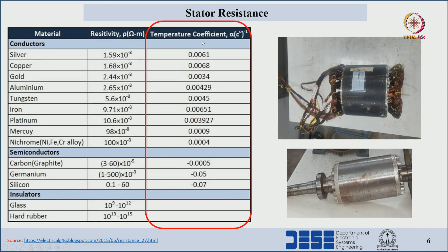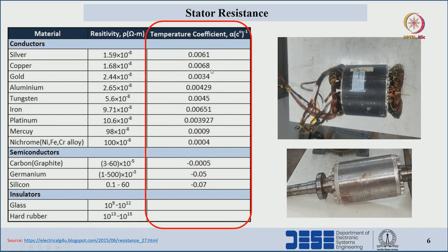Temperature coefficients for different materials are also shown. For copper, the temperature coefficient is 0.0068. Based on the temperature coefficients and resistivity, we calculate the copper losses. MS represents the number of phases.